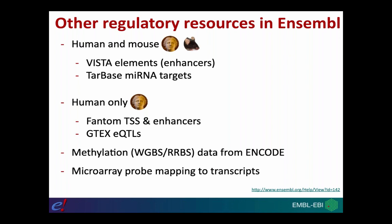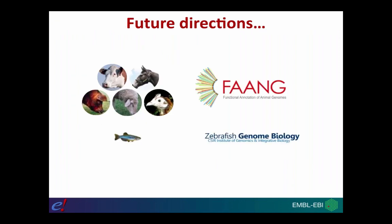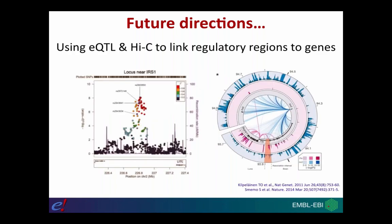In the future, we hope to extend the regulatory build to a number of different species. The FAANG project aims to generate similar data to ENCODE, Blueprint, and Roadmap Epigenomics for agricultural species, and the Zebrafish Genome Biology Consortium aims to generate the same data types for zebrafish cell lines. One major future direction is to map regulatory features to the genes they control, using eQTL and Hi-C data to link regulatory regions to genes.